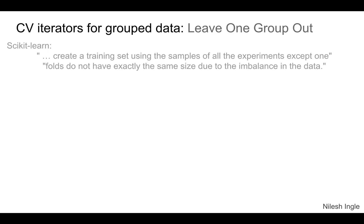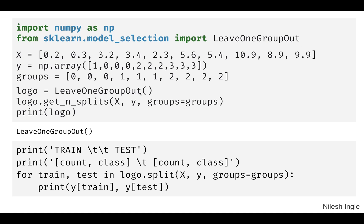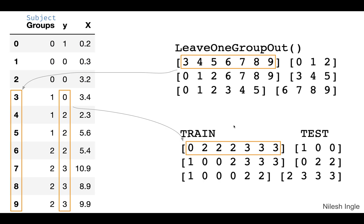Moving on, let's look at leave one group out. Previously we saw leave one out, and this is the same extension of that idea except that now we have the group to consider while performing the folds. Here is the implementation — we have LeaveOneGroupOut, we get the splits, and we need to specify groups equal to groups. In the very first split, indices 3 through 9 are assigned to the train set, and the remaining indices 0, 1, 2 are assigned to the test set.